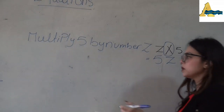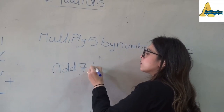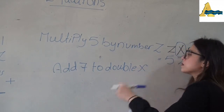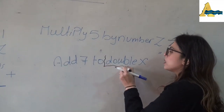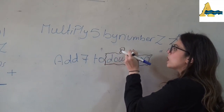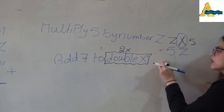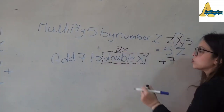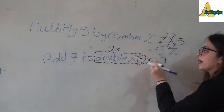Another example: 'add 7 to double x'. First, what is the meaning of double x? Double x means 2x. Then add 7 — add means plus, that means plus 7 — to 2x. So the expression is 2x + 7.